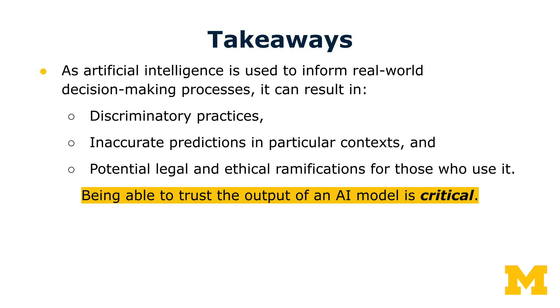Training data may also be based on historical cases that do not apply well to the current moment or that don't translate from one social and political context to another. This means that as AI is used to inform real-world decision-making, it can result in discriminatory practices, inaccurate predictions in particular contexts, and potential legal and ethical ramifications. Being able to trust the output of an AI model is, in many cases, critical. Recognizing that AI output is not inherently trustworthy is essential — given AI's general tendency to sound quite authoritative across various domains, the fact that it is not necessarily as trustworthy as it sounds is a key thing to attend to in evaluating AI models.